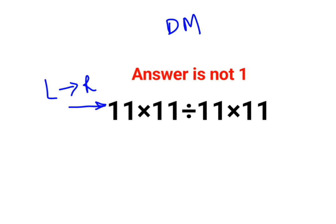Whatever operation happens first from your left hand side has to be done first. So 11 multiplied by 11 is 121 divided by 11 multiplied by 11. So now what is the next operation which comes first from your left hand side is division.